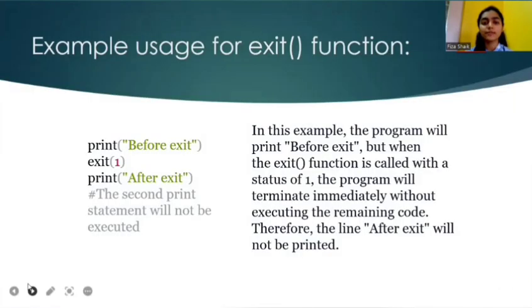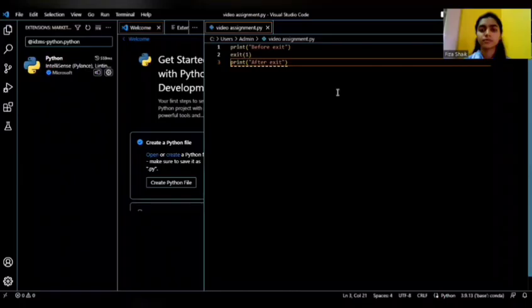Example usage of exit function. Here is a simple code for exiting a program. In this example, the program will print before exit. But when the exit function is called with a status of 1, the program will terminate immediately without executing the remaining code. Therefore, the line after exit will not be printed. So let us execute this program.